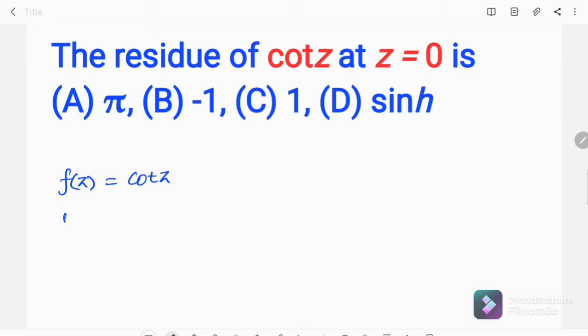Note that here we can write that cot z is equal to cos z divided by sin z. Therefore, we have f(z) like this, that is φ(z) divided by ψ(z).